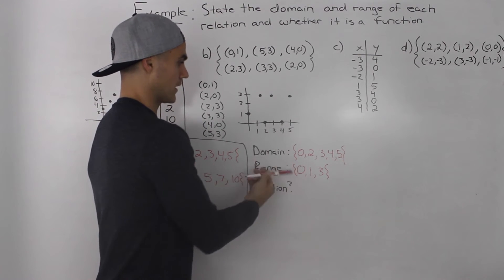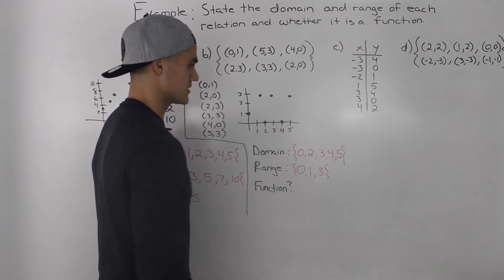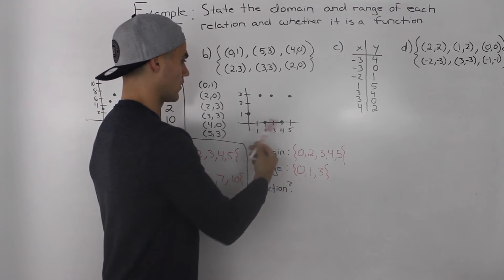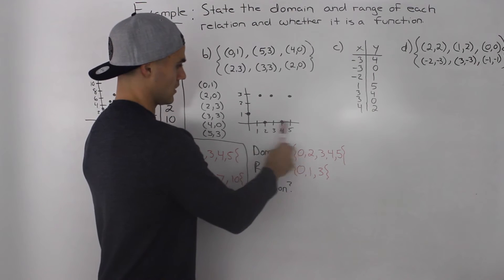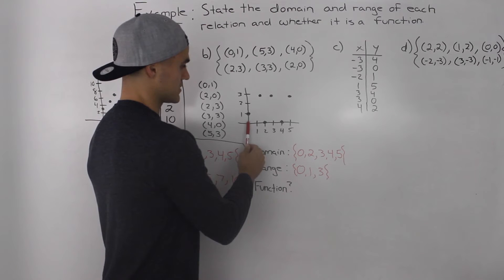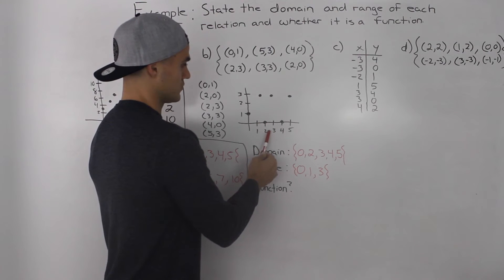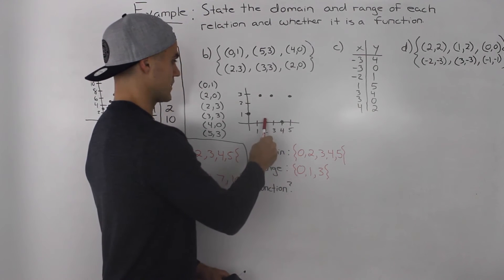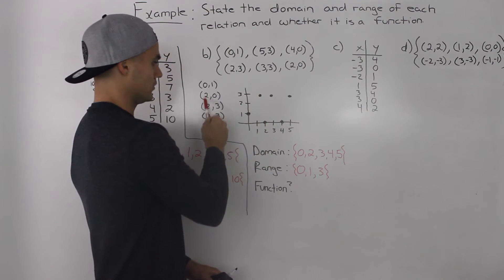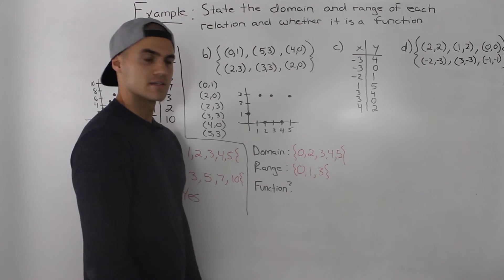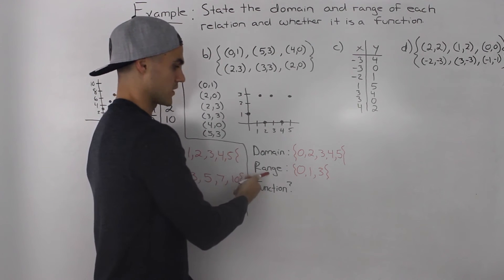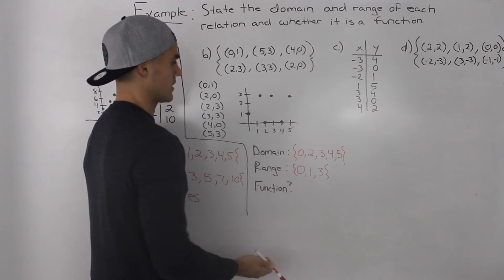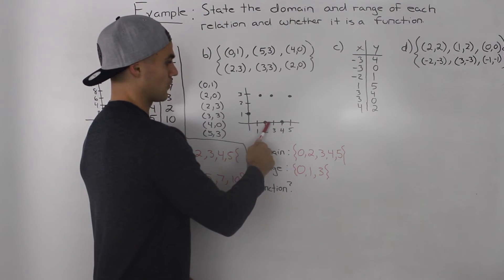From the graph it's easy to find the domain and range, and it also works from the list of points. The domain — the set of values the independent variable can take — is just all the x values along the x axis: 0, 2, 3, 4, and 5. For any points that appear twice, like (2,0) and (2,3), I only wrote the x value of 2 once. For the range, going up the y axis, the y values are 0, 1, and 3.